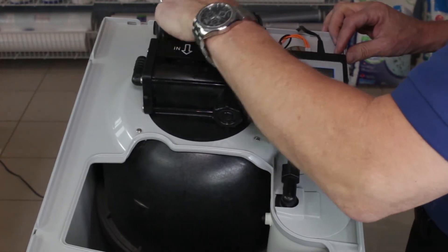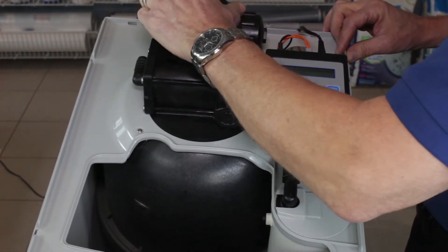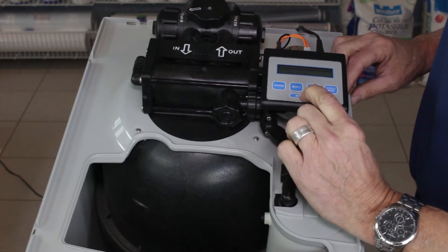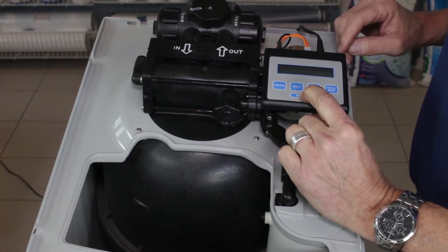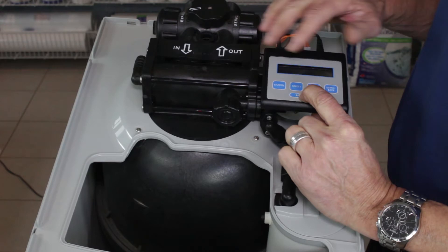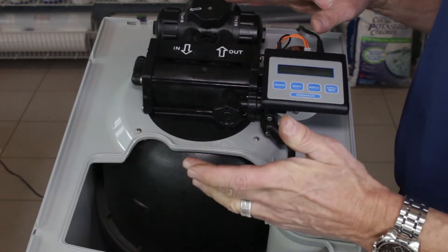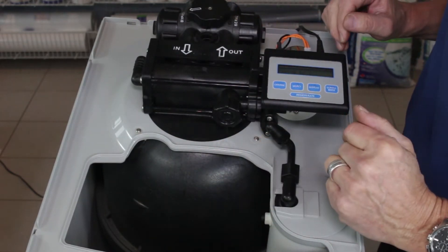To start, we put the water softener into bypass mode. Once it's in bypass mode, we hold down the regenerate button for five seconds, and that will put the water softener into regeneration, which releases any pressure that's inside the water softener.